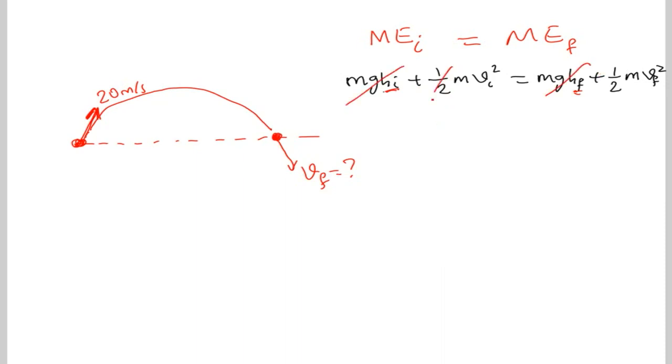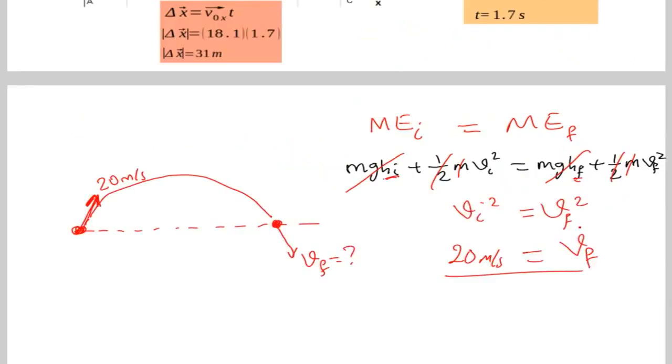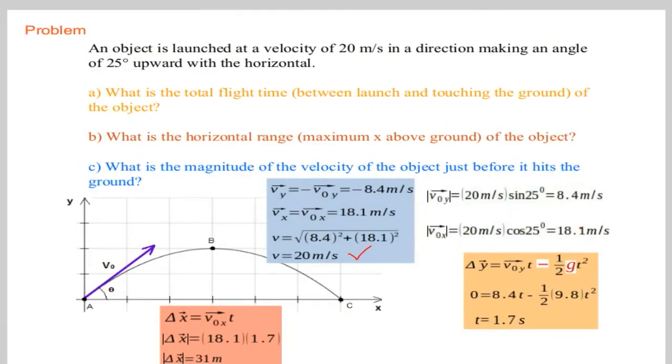We can also simplify 1 over 2 m, 1 over 2 m terms so what is remaining is v initial squared equals v final squared. If we know v initial which is 20 meter per second, that's going to be the v final. V final we found 20 meter per second for the final velocity and the answer agrees with our results using kinematic equation. Thank you for your attention.